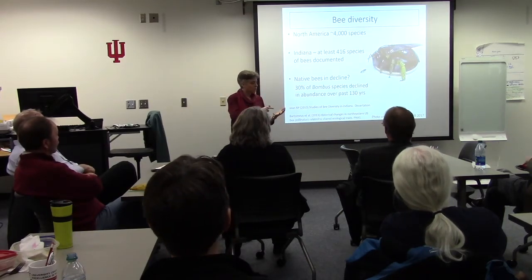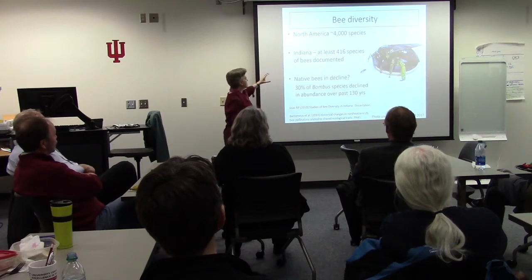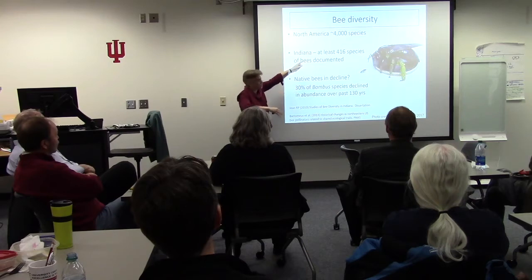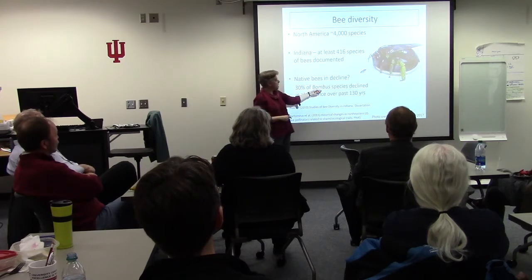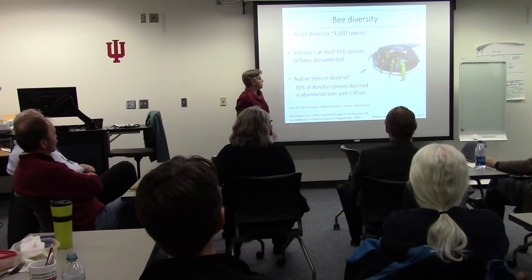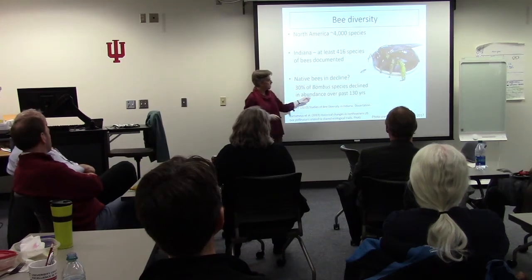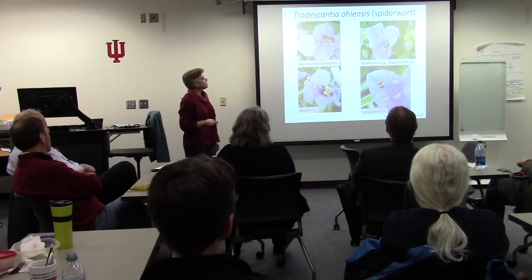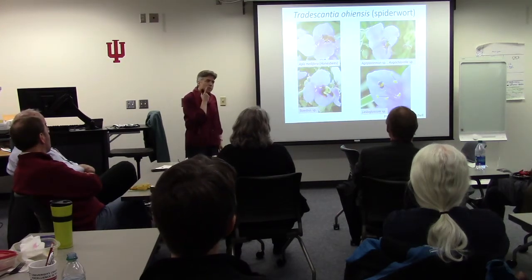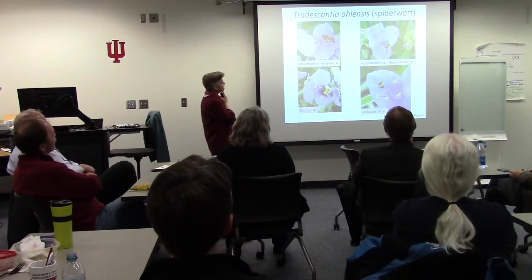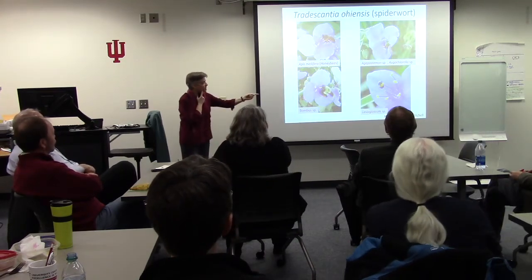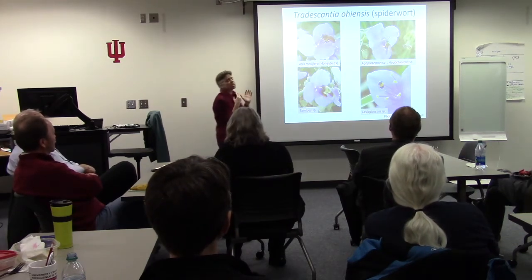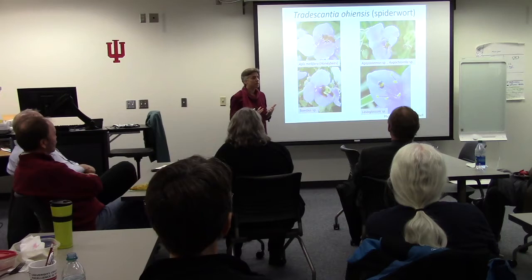We do know that for Bombus — bumblebees — about 30% of those species are in decline, based on museum specimens. I wanted to show some photos from campus. This is spiderwort, Tradescantia — photos that David took with his cell phone. Just to give you a flavor for some of the different kinds of bees we're seeing: honey bees — we've got a honey bee hive on campus — a couple of different species of green sweat bees, Agapostemon and Augochlora, multiple species of Bombus, bumblebees.